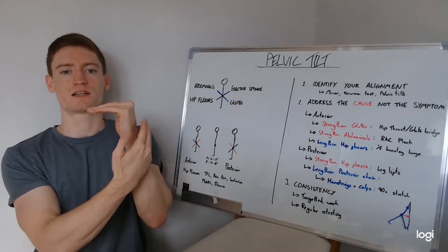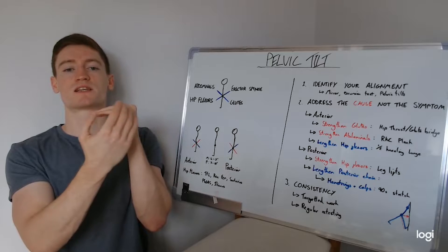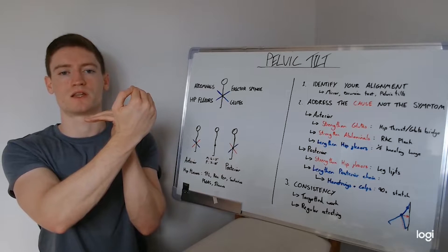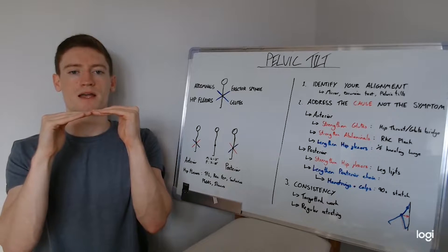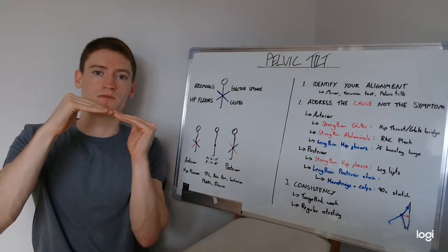...is a tightness of the hip flexors at the front of the hips, as well as a slight weakness, relatively, between the abdominals and the glutes on the back, which would then tilt the hips forward.